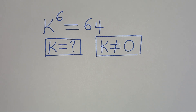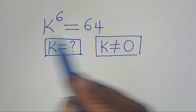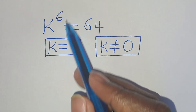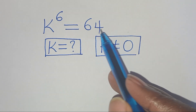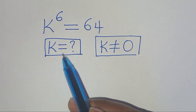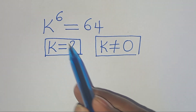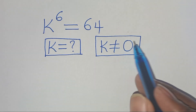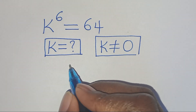Hello everyone, you are welcome to solve this nice exponential equation here, which is k to the power of 6, this is equal to 64. So what are the values of k, given that k is not equal to 0?